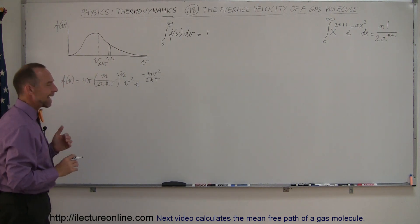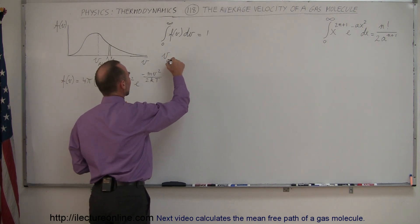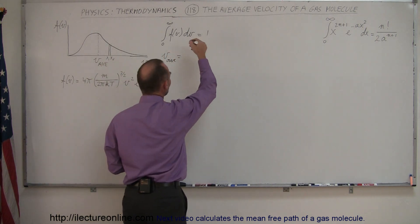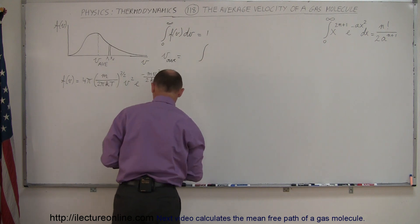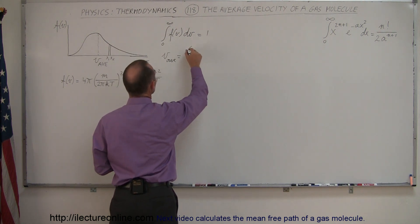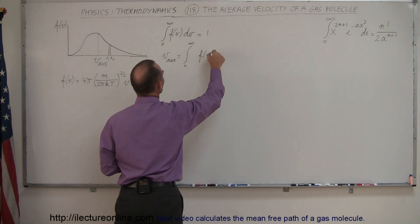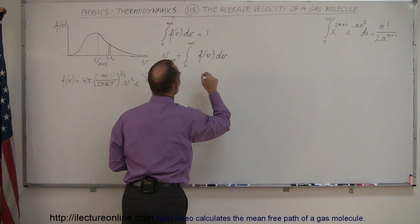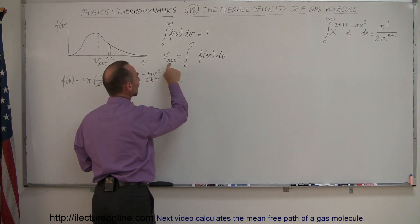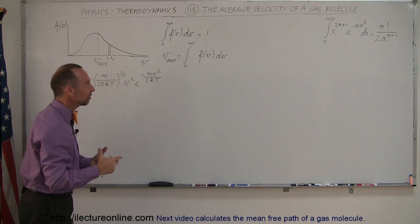Now how do we find the average velocity? The V average would be equal to the integral from 0 to infinity of f(V) dV. Now you realize that if I leave it like that, I don't get the average velocity, I just get 1, the totality, 100% of all the molecules.